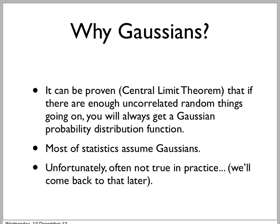More specifically, if there are a lot of different random processes going on, and sometimes they add up, sometimes they don't, but whether they add up or not is completely random — then if there's enough of them, you will get a Gaussian distribution. So they are quite common. Most of statistical theory, in fact, assumes that the probability distribution function is Gaussian.